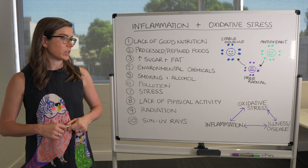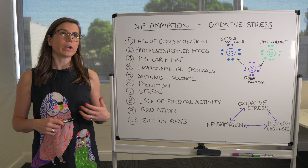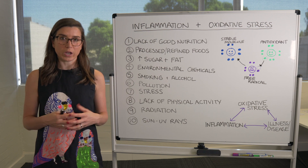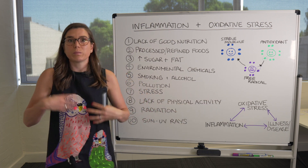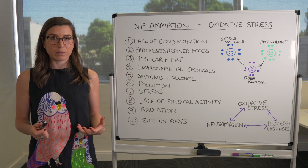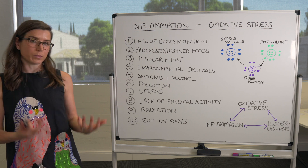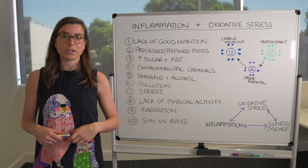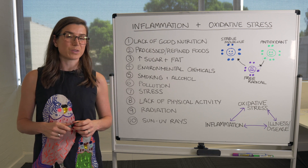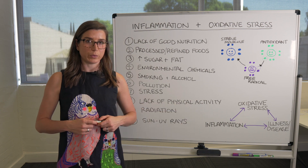Stress can actually generate free radicals and oxidative stress in the body. Lack of physical activity — when you actually move your body and exercise, in the short term, particularly during a more strenuous workout, you do produce some free radicals as chemical reactions take place. But at the same time, you're stimulating your body to produce its own antioxidant capacity. So exercise is actually helpful in reducing oxidative stress and inflammation in the long term. Being physically inactive and sitting around all day potentially increases the risk of oxidative stress building up in your body.